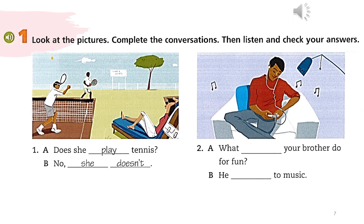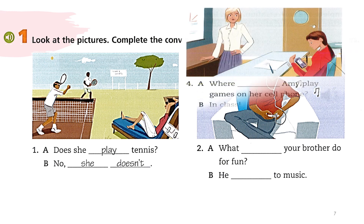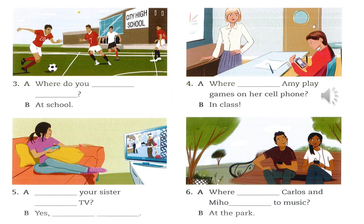Page 38, Language Practice. Look at the pictures, complete the sentences, then listen and check your answers. 1 - Martin can't sing. 2 - Natalie and Marco can dance. 3 - Tim can play the piano. 4 - Ellen can draw.